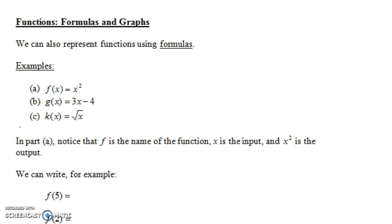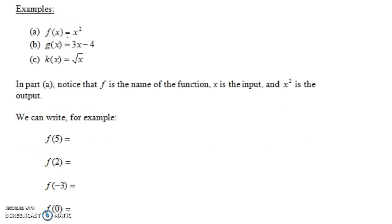Notice in part a that f is the name of the function, x is the input, and x squared is the output. We can write, for example, for this formula, f of 5 equals 5 squared which is 25.